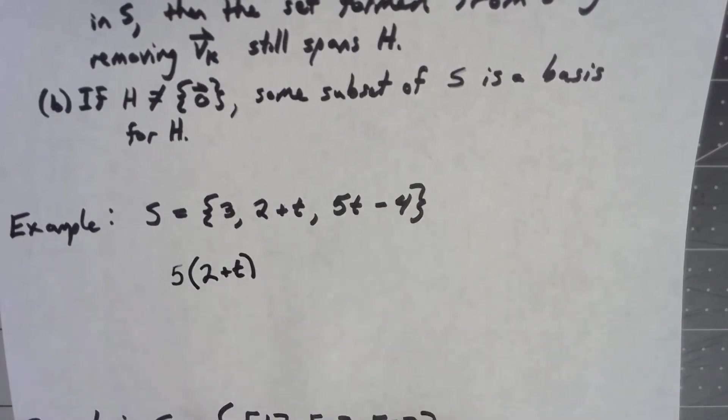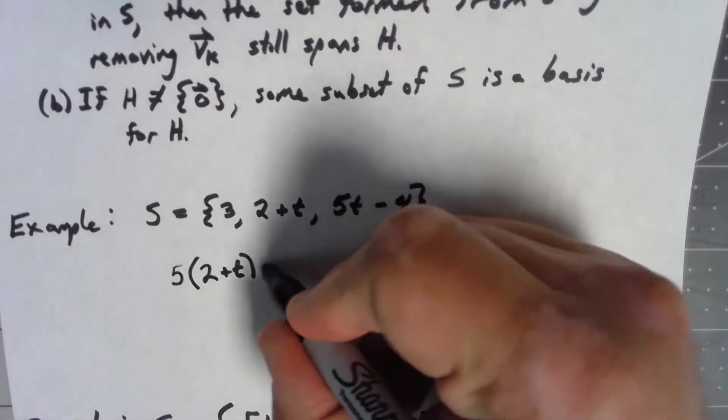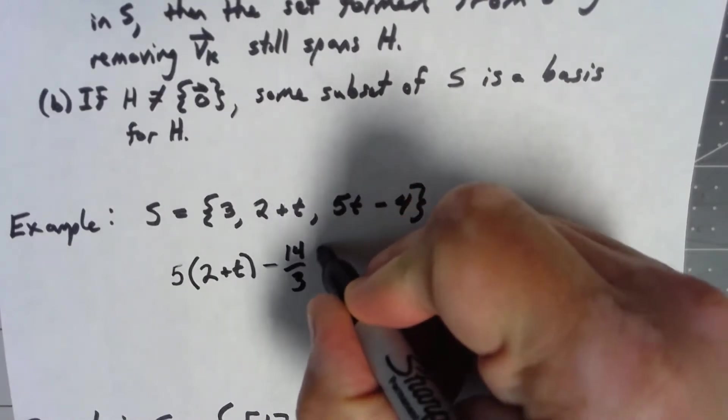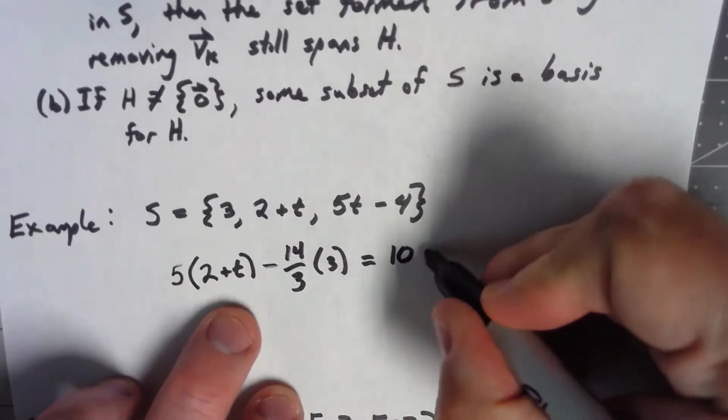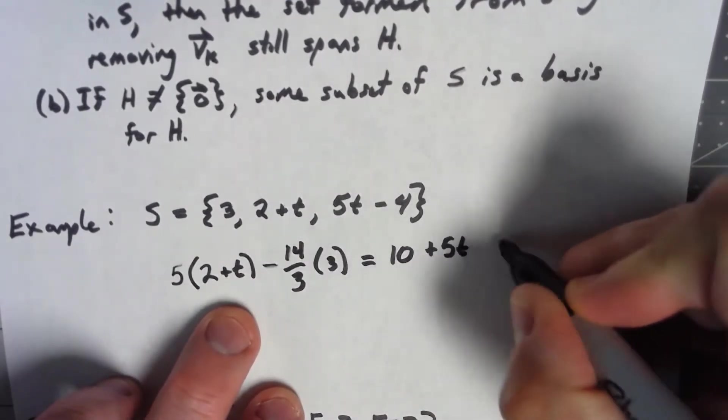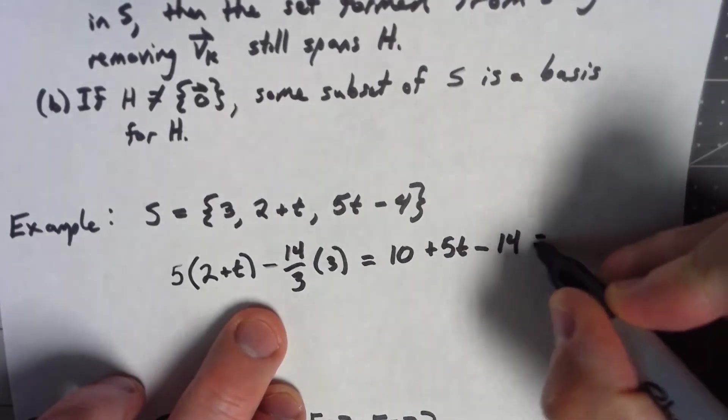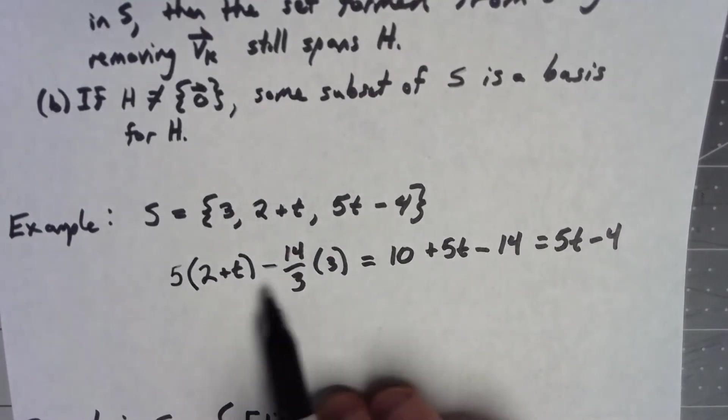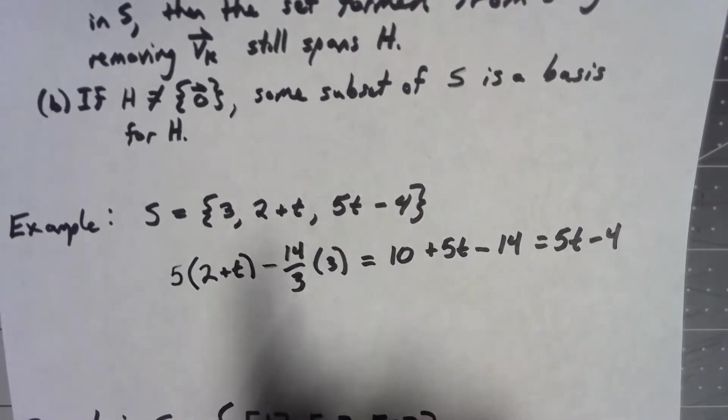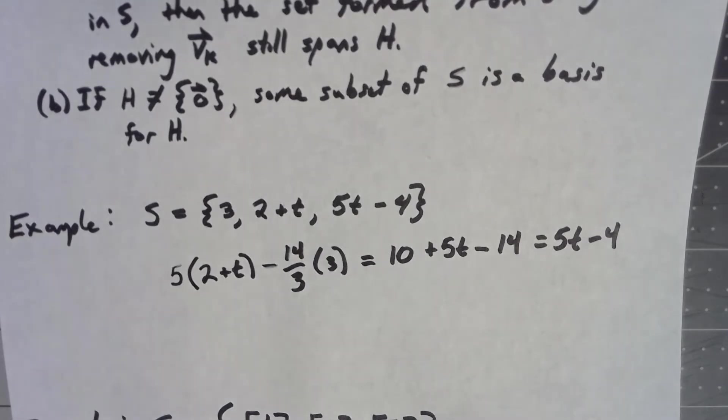That's not 5t minus 4, but if I then do minus 14 and 13 thirds times 3, then I have 10 plus 5t minus 14 is 5t minus 4. I've got a linear combination of the first two vectors that create the third.